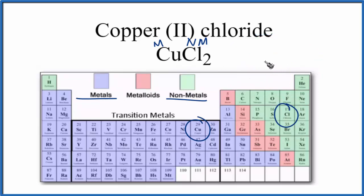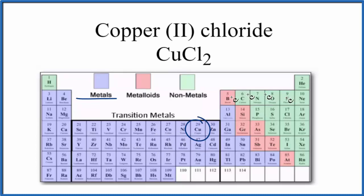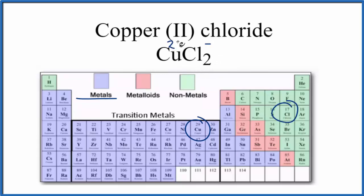Since it's ionic we really should look at the charge on the ions. For copper, it's a transition metal, so we can't figure its charge out just by looking at the periodic table. But chlorine is in group 17, sometimes called 7A, and all of these have a 1 minus ionic charge. Since we have two of them — 2 times 1 minus — we have a 2 minus overall, so copper has to be a 2 plus. That's why we call it copper 2, because it has a 2 plus ionic charge.